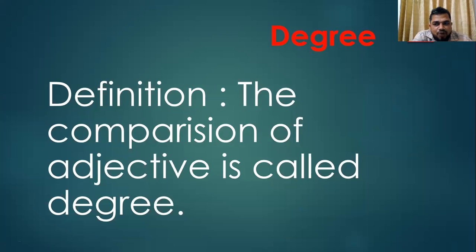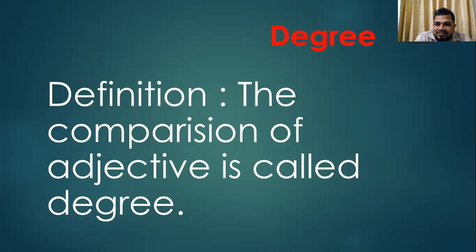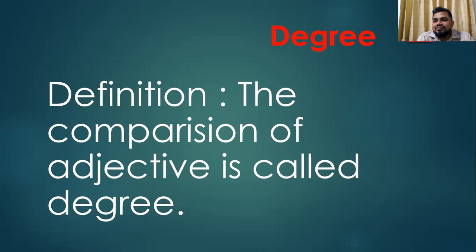There are three kinds of degree: positive, comparative, and superlative. When there is no comparison of adjectives, it is called positive degree — for example, 'He is a good student.' Comparative degree is when the comparison is between two persons or things — 'He is better than Rahim.' Superlative is when the comparison is among more than two persons or things.